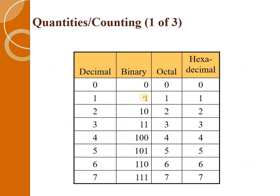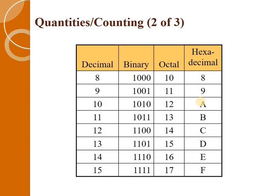Let us see what this actually looks like. In decimal 0 is 0, in binary it is 0, in octal it is 0, and in hexadecimal it is 0. From 2 onwards: 2 in decimal is 10 in binary, 2 in octal, and 2 in hexadecimal. For 15: it is 1111 in binary, 17 in octal, and F in hexadecimal.